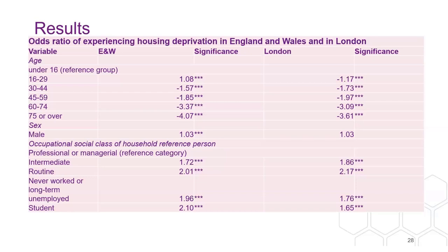Taking the reference group of those under 16 in England and Wales, the 16 to 29-year-olds are slightly more likely to be housing-deprived. All other groups are less likely to be housing-deprived, and that increases with age. Men are slightly more likely to be housing-deprived than women in England and Wales, but there's no significance in London. Looking at occupational social class, we can see a hierarchy where it's more likely for those in intermediate and routine jobs, and students are kind of different in England and Wales compared to London.